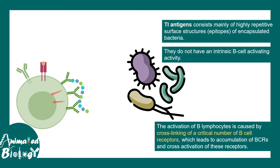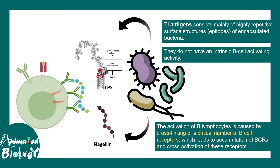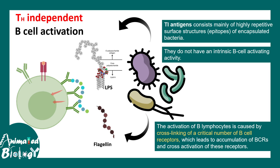Many times bacteria secrete flagellin or LPS — these kinds of antigens can crosslink the receptors, and this is the trigger for B-cell activation. Crosslinking is the critical factor which leads to receptor activation, but this is much less potent and in many cases does not lead to subsequent changes.